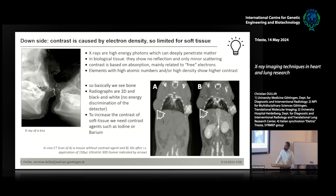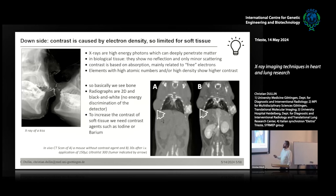You can address the soft tissue problem by using contrast agents, as is done in the clinic all the time. You have two options: you can inject intravenously — usually iodine-based — or orally, which is usually barium-based. Here you see a mouse before and after intravenous injection; this is actually a tumor-bearing mouse. You see a tiny bit more contrast in the tumor, but everything like the vessels and kidneys lights up. This is just a regular clinical contrast agent.